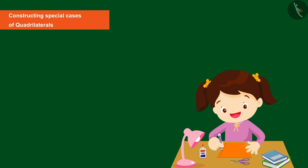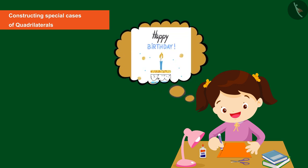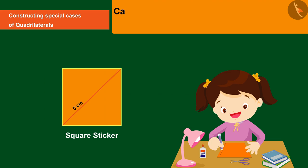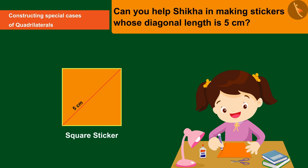Shikha wants to make a birthday card for her best friend's birthday in which the diagonal length of a square sticker used is five centimeters. Can you help Shikha in making stickers? Shikha wants a square whose diagonal length is five centimeters.